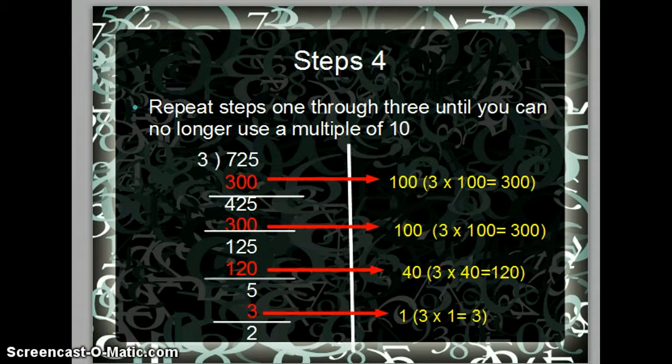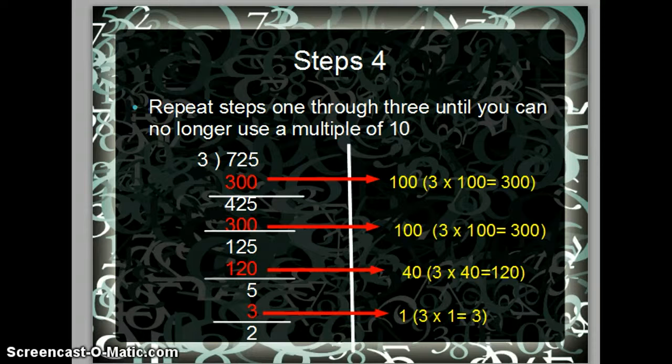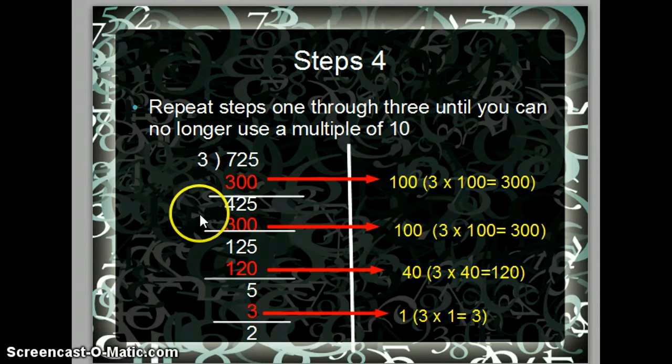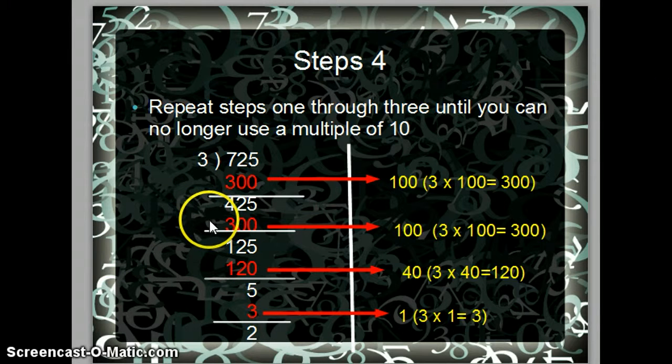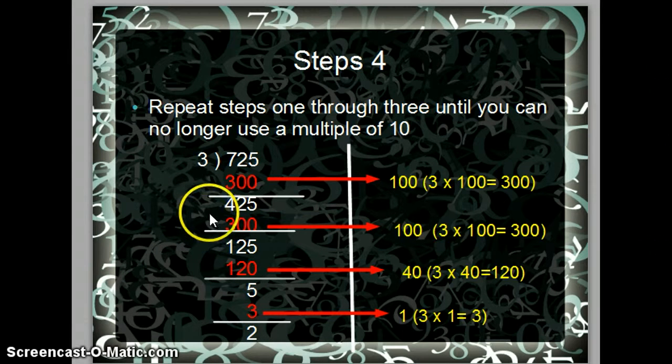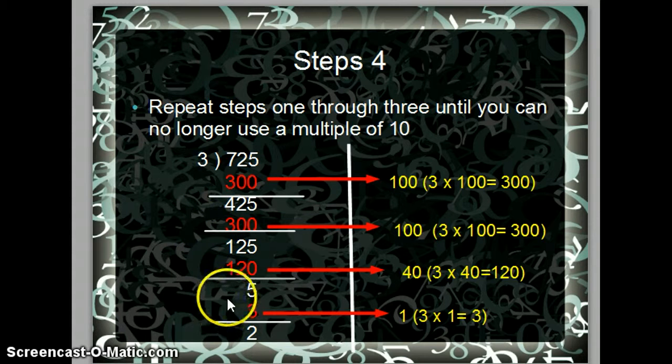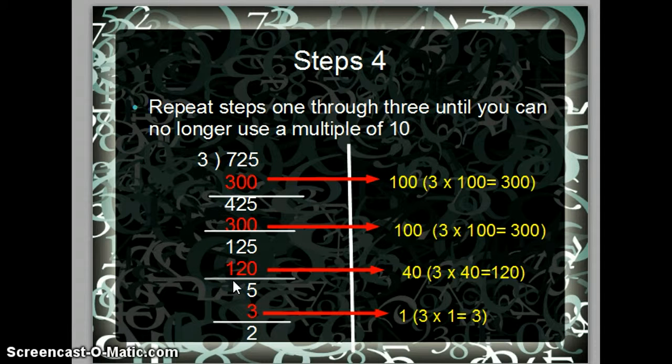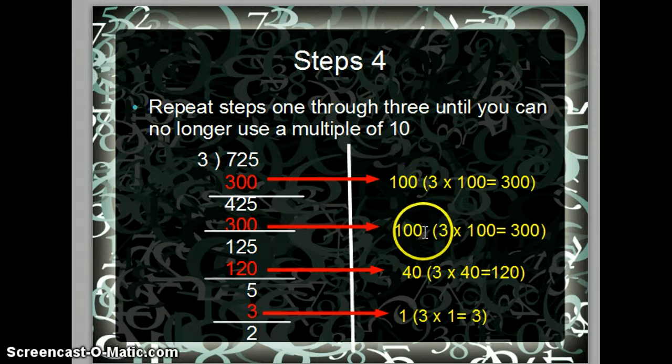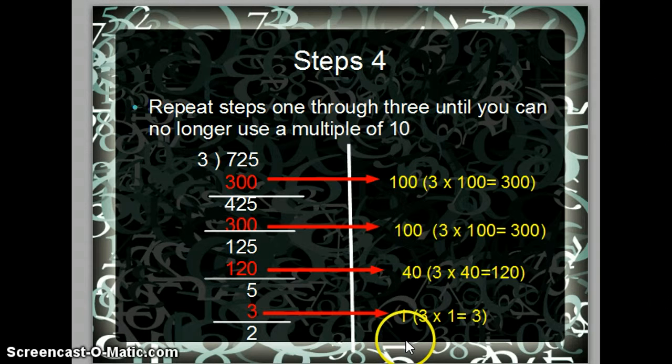Step 4, you want to repeat that step over and over until you can no longer use a multiple of 10. So here, after we arrived at 425, we continued with 300 as a multiple, 120 and 3. The corresponding quotients were written in the quotient column: 100, 100, 40 and 1.